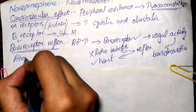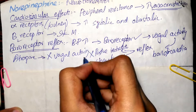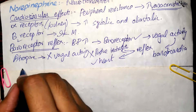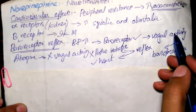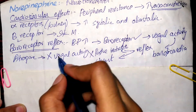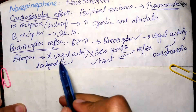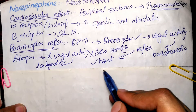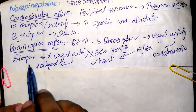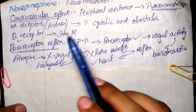Atropine is a drug that inhibits vagal activity. If we inject atropine before injecting norepinephrine, vagal activity is decreased and there is no reflex bradycardia — instead, tachycardia occurs, an increase in heart rate. This demonstrates how reflex bradycardia helps the heart compensate for the action of norepinephrine.